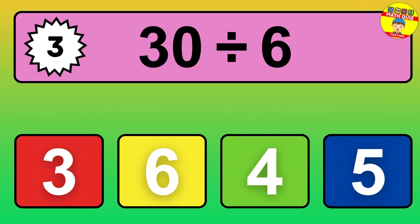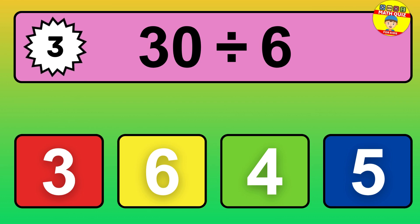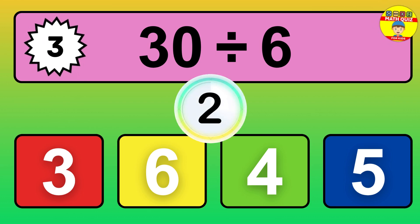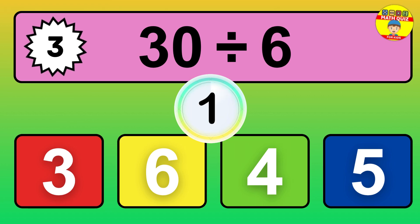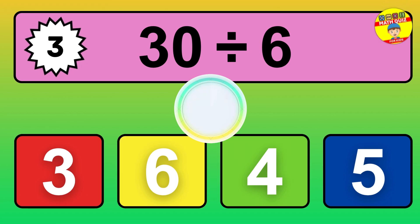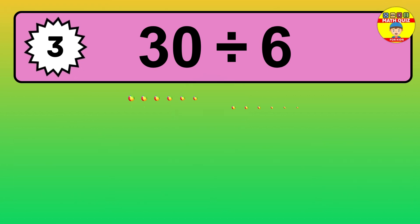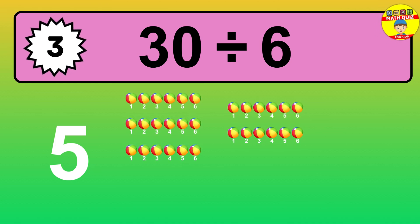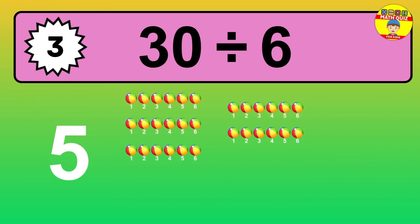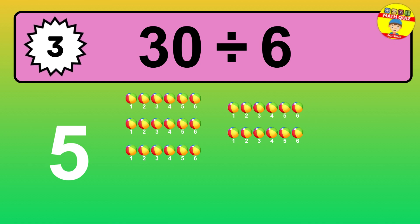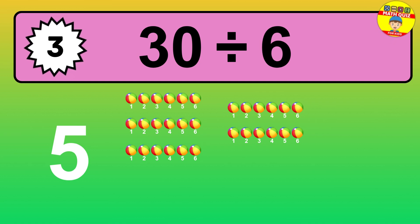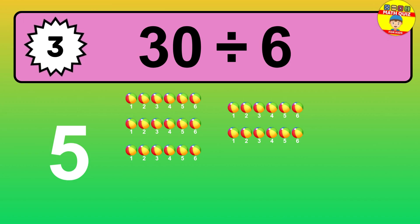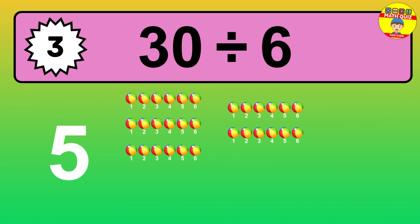30 divided by 6 — time to think! Let's go to the solution. Divide the number 30 by 6. Each group contains 6 units, so dividing 30 by 6 results in 5 equal groups. Thus, the result is 30 divided by 6 equals 5.